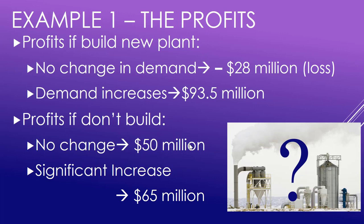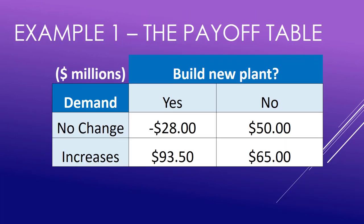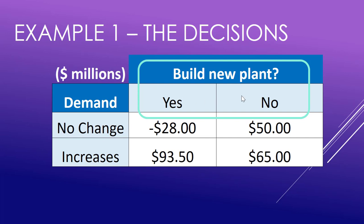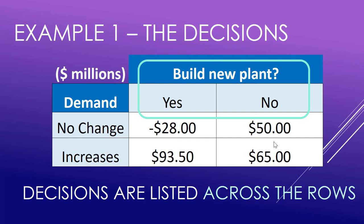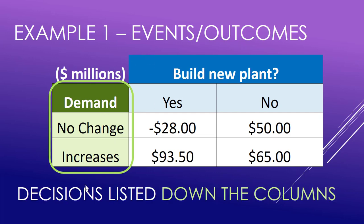Here is what the payoff table looks like. The decisions — build a new plant: yes or no — are listed across the rows. The events, either demand has no change or it increases, are listed down the columns. This is our initial payoff table. In the next video, we're going to look at this example again with a more complicated and realistic lens.